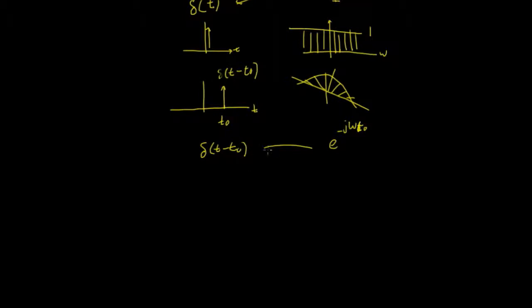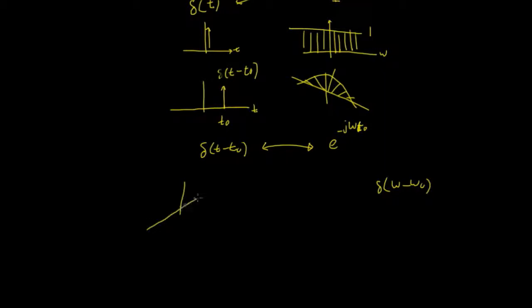We can do the same thing in the frequency domain. So in the frequency domain we can take our values - similarly delta(omega - omega₀) - and then we can do the inverse transform. If we do the inverse transform, we start getting this effect in the time domain because of the symmetry of the Fourier surface.